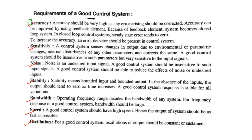Sixth, speed — a good control system should have high speed, hence the output of the system should be as fast as possible. If the speed of the control system is high, we can get a fast output response. Seventh, oscillations — for a good control system, oscillations of the output should be constant or sustained.